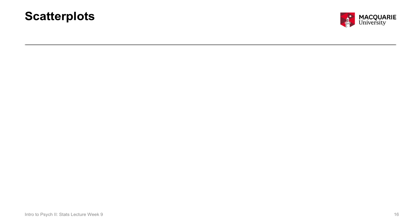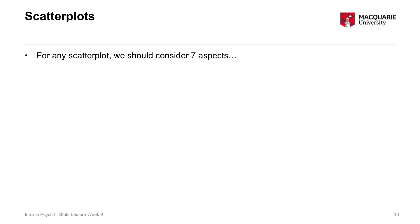Now we're moving on to scatterplots. Scatterplots are graphical depictions of the data forming our correlation. They're really important to run before the correlation itself because they give insight into whether assumptions are met. You can quickly spot problems in your data by looking at a scatterplot, and more formally, there are seven different points we want to interpret.